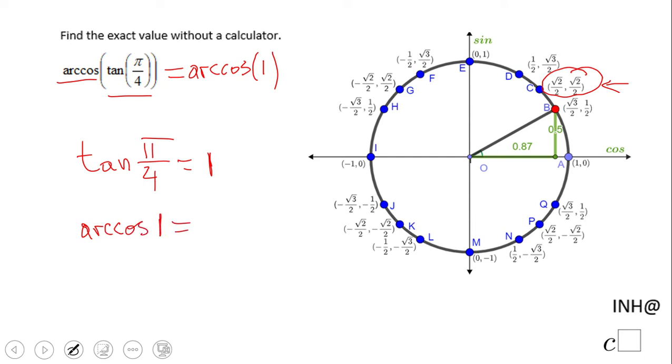So the question now is: when is the cosine 1? What is the angle for which the cosine is 1?